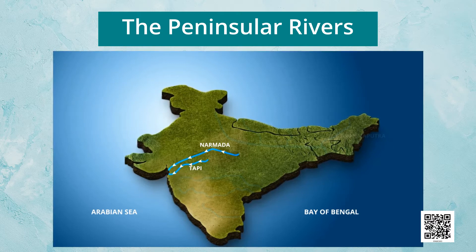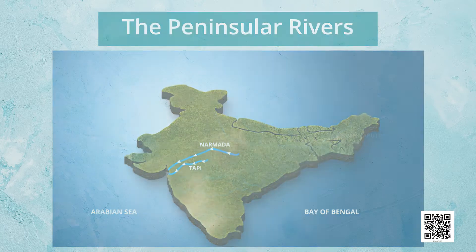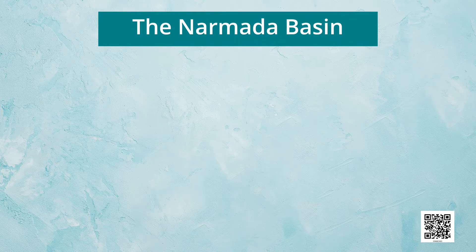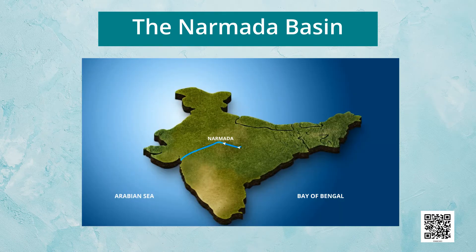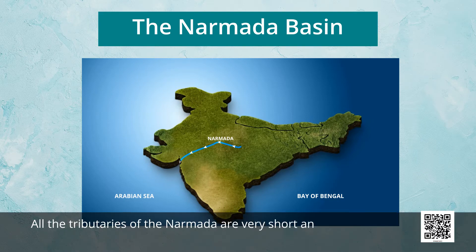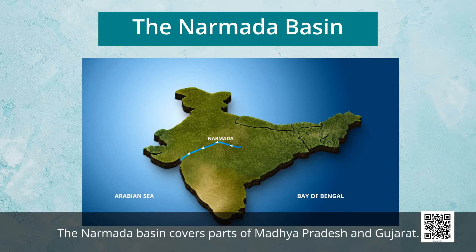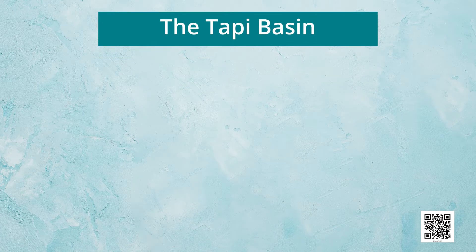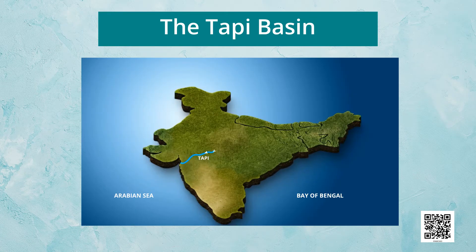The Narmada rises in the Amarkantak Hills in Madhya Pradesh. It flows towards the west in a rift valley formed due to faulting. All the tributaries of the Narmada are very short, and most of these join the mainstream at right angles. The Narmada basin covers parts of Madhya Pradesh and Gujarat.